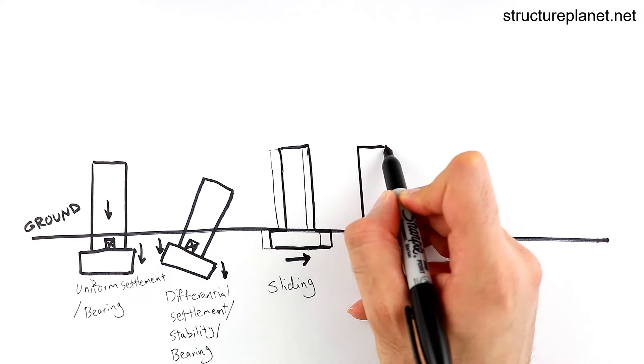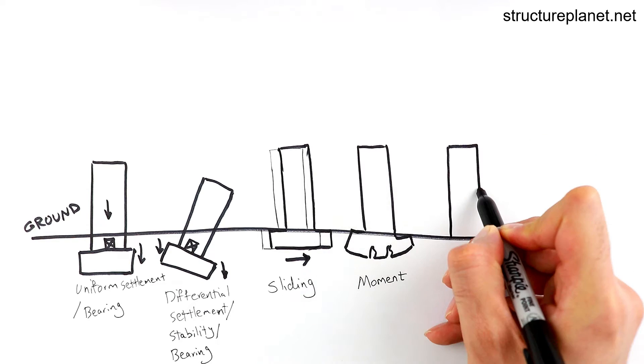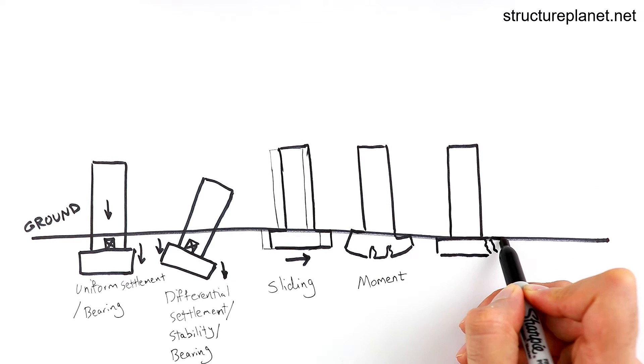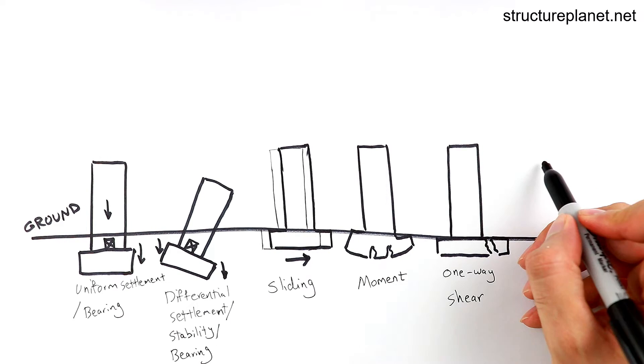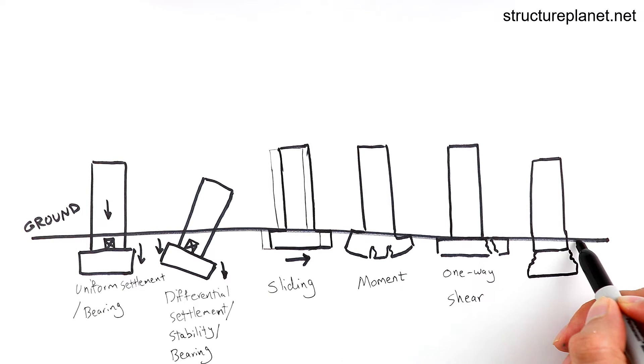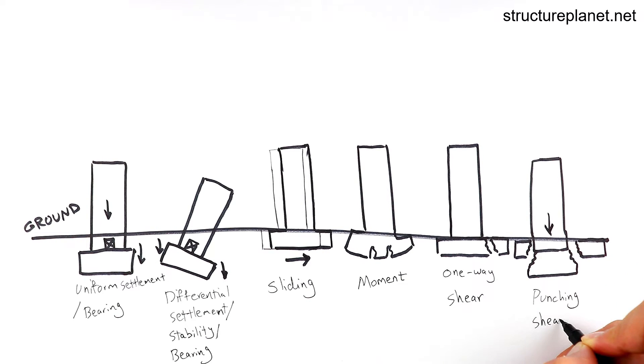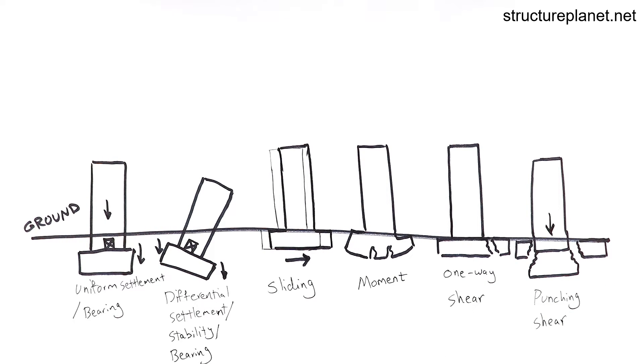If the lateral elements experience net tension at the base, the tension will be transferred to the foundation system and it can create uplift which is when a portion of the foundation is being lifted off the ground. In this case, engineers may try to use a heavier foundation structure or add tension-resisting piles or caissons.